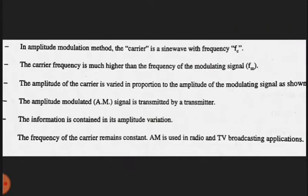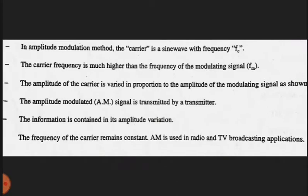The first is amplitude modulation. In this method, the carrier is a sine wave with a frequency fc. The carrier frequency is much higher than the frequency of the modulating signal.